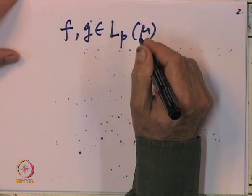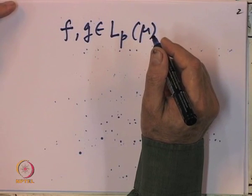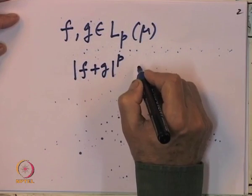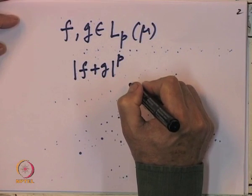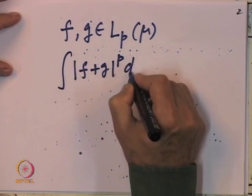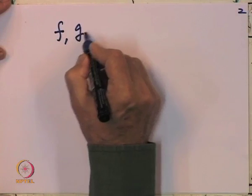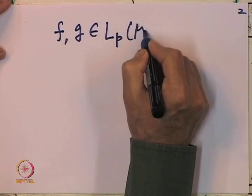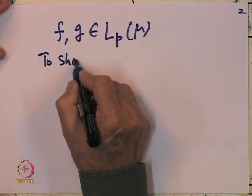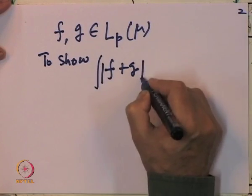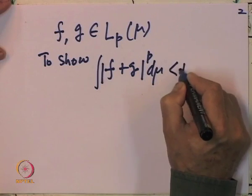Let us look at the second property, namely addition. Let F and G belong to L^P(μ). We want to show that |F+G|^P has finite integral, that is, F+G belongs to L^P(μ).